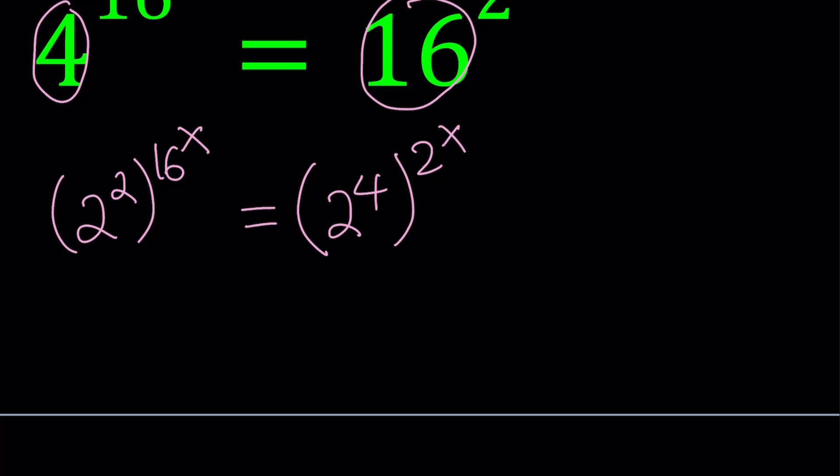So now, here's what we're going to do. If you have a^(x^y), that is a^(xy), or vice versa. And you can also switch the x and y around, right? So the power of a power, or some people call this superpowers property, gives us 2^(2·16^x) = 2^(4·2^x).